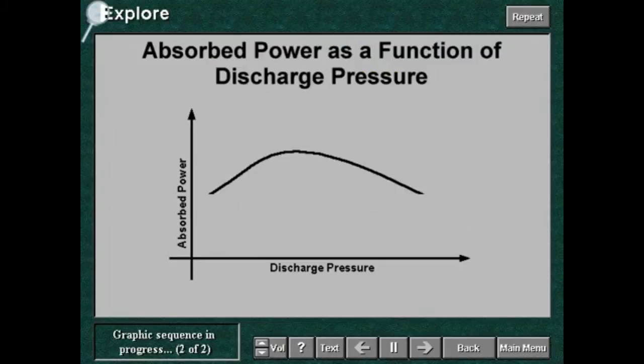The change of absorbed power with the discharge pressure is shown on this graphic. Assume an initially low compression ratio. If the discharge pressure is gradually increased, at first the absorbed power of the compressor increases due to the increase in compression ratio. As the delivery pressure continues to rise, however, the reduction in flow rate affects the power more than the compression ratio. The absorbed power reaches a maximum value and then decreases.